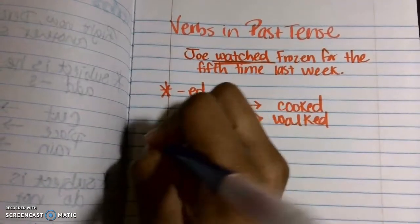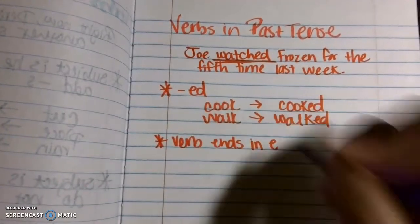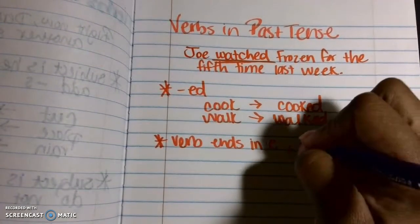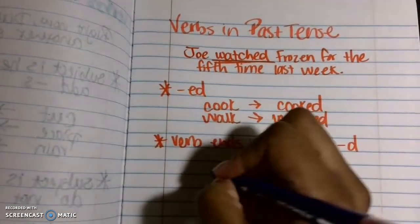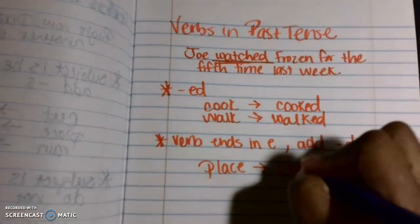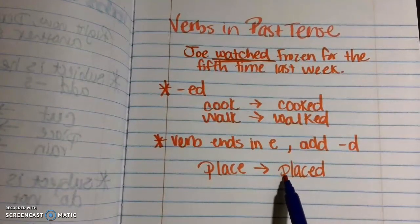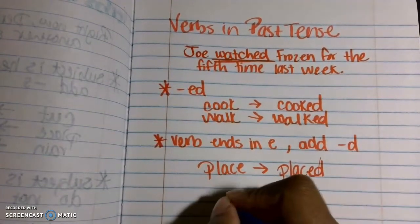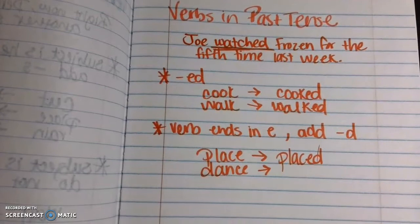If the verb ends in E, then we do something a little different. Instead of adding E-D, we simply just add a D, because it already has the E there. For example, 'place' becomes 'placed' — it would look very weird if we added E-D and it was 'placeed,' so we just add the D. Another example: 'dance' becomes 'danced.'